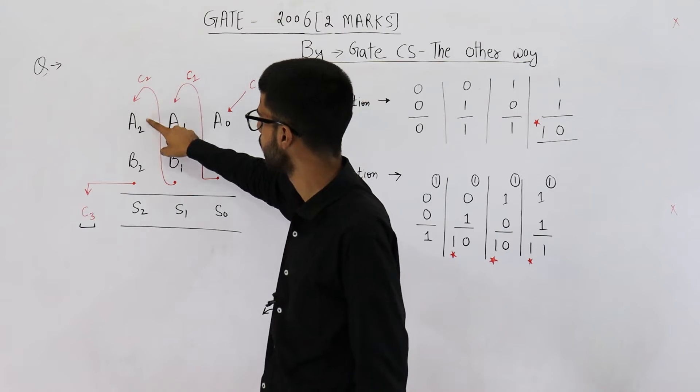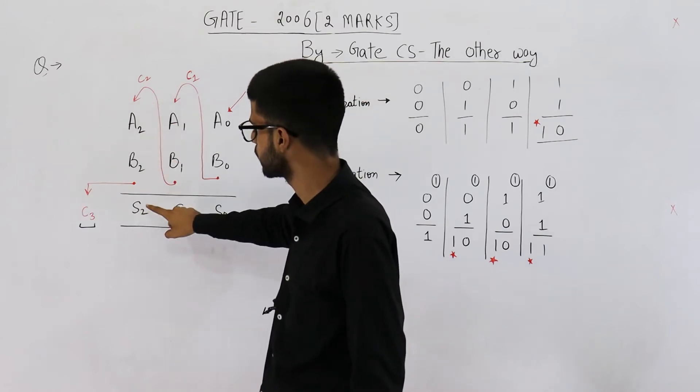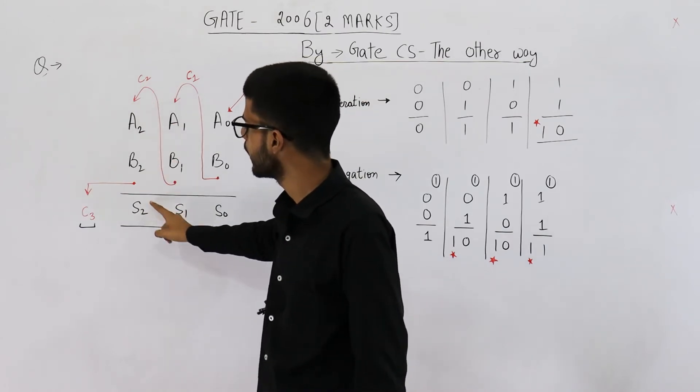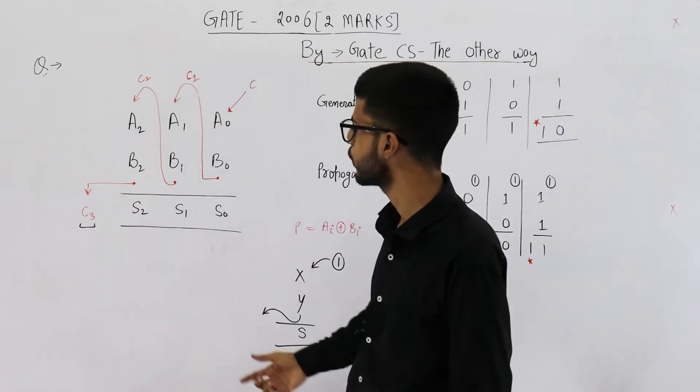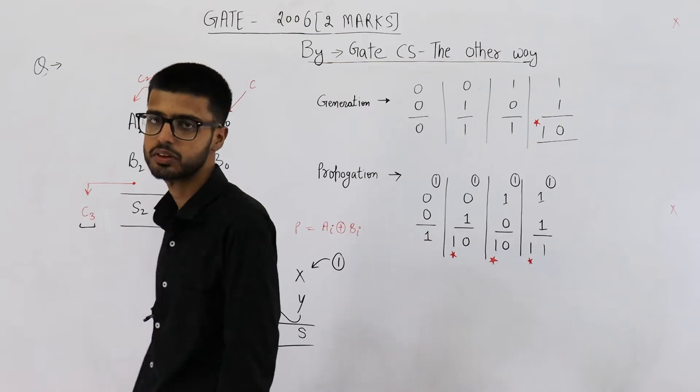The sum you get is S1 and carry C2 is generated for the next stage. Then you add these three, C2, A2, B2. The sum you are getting is S2 and a carry C3 is generated. C3 is the final carry for which we are going to write down the expression.